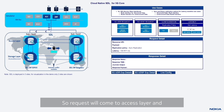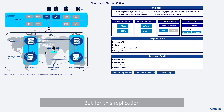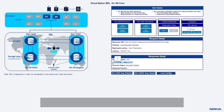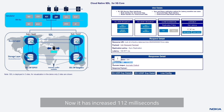The request comes in, is sent to the storage layer, and is routed to another replica — but for this replication step, the added latency comes into play. As you can see, the response time has now increased to 112 milliseconds, compared to 14 to 15 milliseconds before. It has increased to 112 milliseconds because of the latency playing a role.